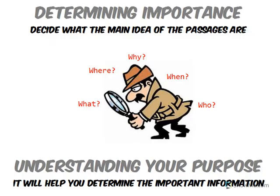So remember that determining importance is deciding what the main idea of the passages are. If you understand your purpose, it will help you to determine the important information. Another way is to look for who the story is about, where the story is happening, what is happening, when is it happening, and why is it happening. These are all things that could help you to determine the importance.